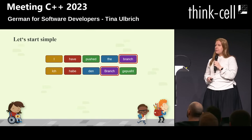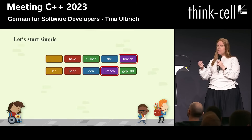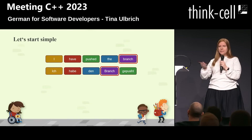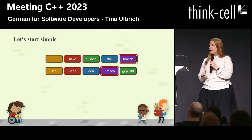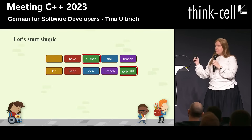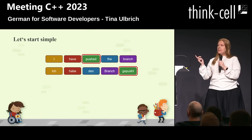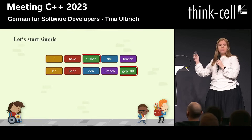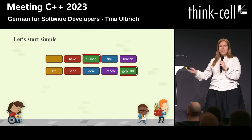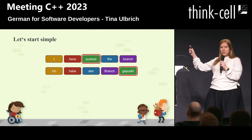Notice that we keep the word branch, but it's a noun, so we capitalize it. That's the German language rules. But the important word — the interesting word — is the word "gepusht." This is perfect, valid German. We speak like this.